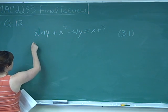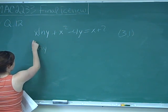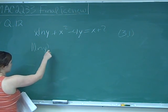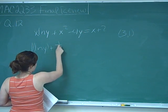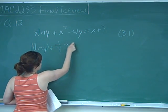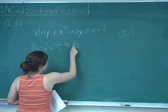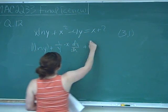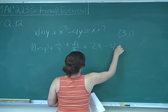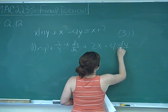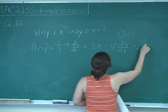So I get the derivative of my first is 1 times my second, ln y, plus the derivative of my second, 1 over y, times my first, x, dy over dx, plus 2x minus 4 dy/dx is equal to 1.